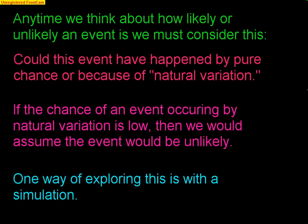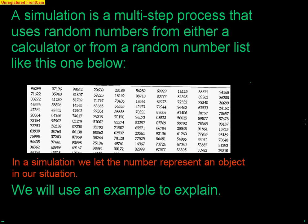One way of exploring this idea is with simulations. A simulation is a multi-step process that uses random numbers from either a calculator or a random number table. A simulation consists of a sequence of random outcomes that model a situation. The most basic event is called a component. We use numbers to represent outcomes — that's the whole idea of using random numbers to represent random outcomes.